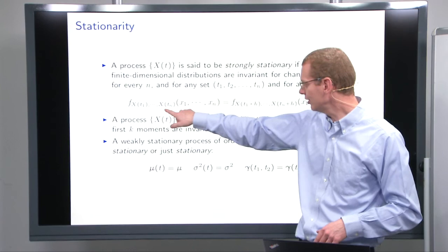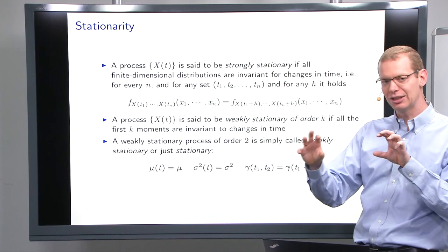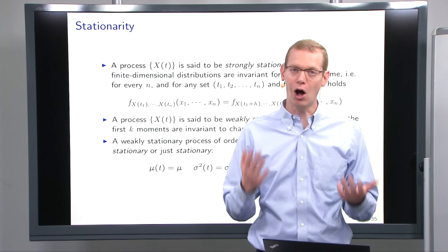Order two means that besides the mean value, you also need to have a constant variance. And the covariance, well, if the density is the same irrespective of shifts in time, it also means that it doesn't matter when you measure T1 and T2. What matters is the distance between T1 and T2. So the covariance becomes a function of the time difference if it is a weakly stationary process of order two.